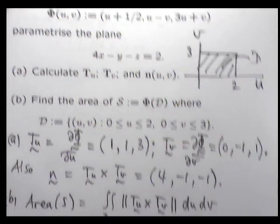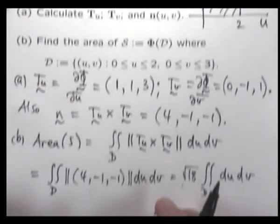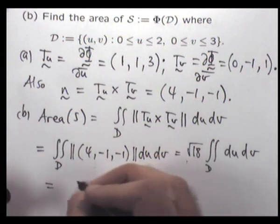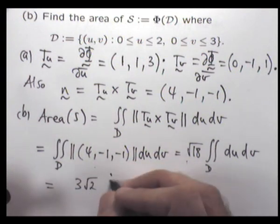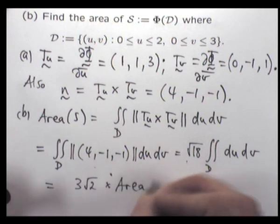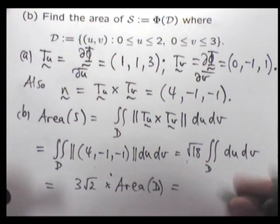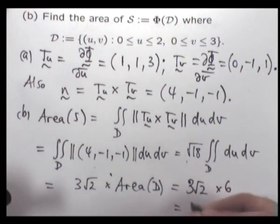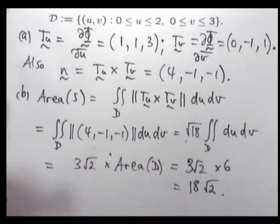All right. So we recognize that... Hang on. It's just 3 root 2 times the area of D, and the area of D is just 6. All right. So the surface area of our surface is just 18 root 2 square units.